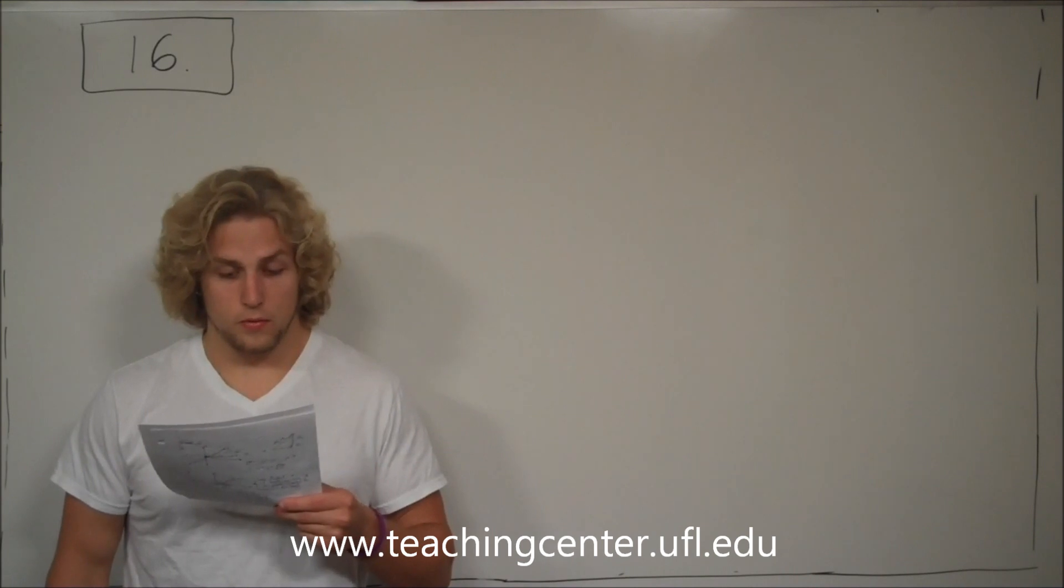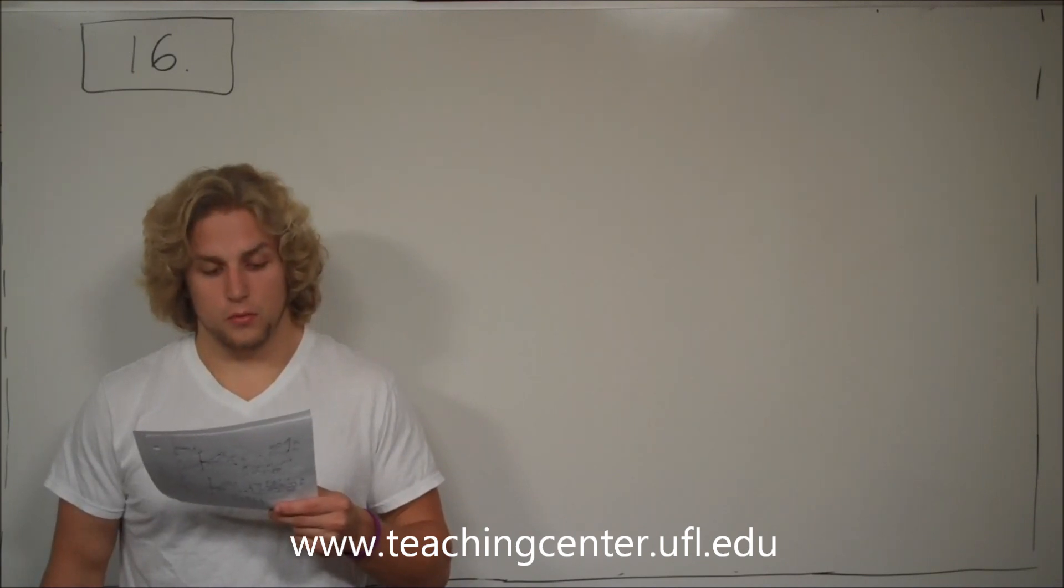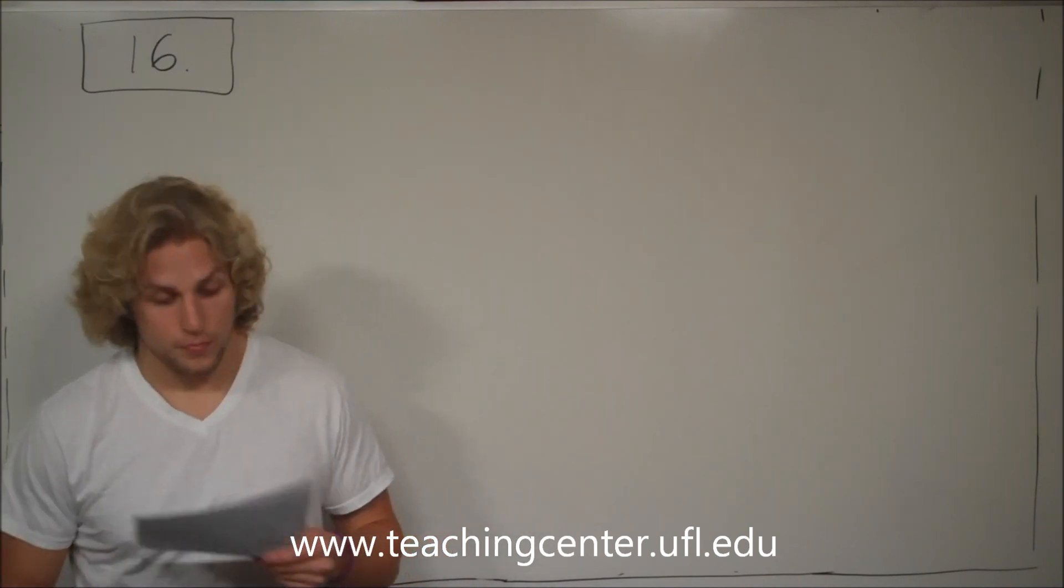To start it moving, a second person pulls vertically upward on the box. The coefficient of static friction is 0.4. Find the smallest vertical force for the box to move.